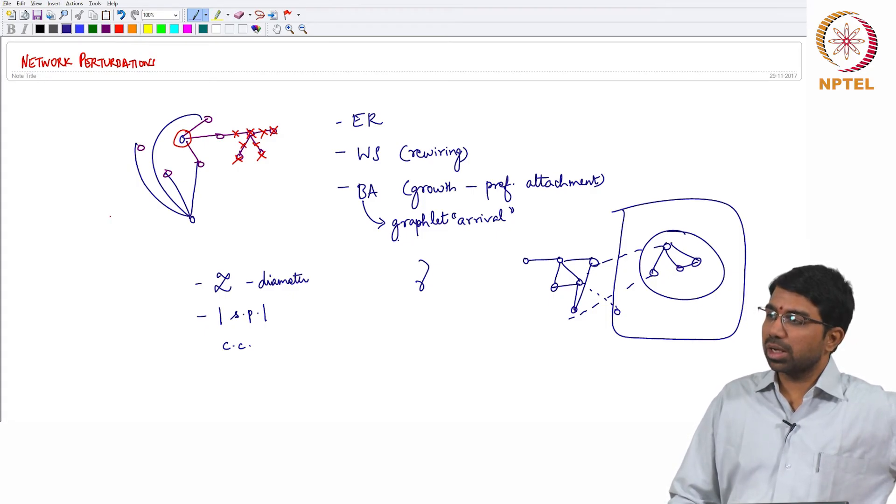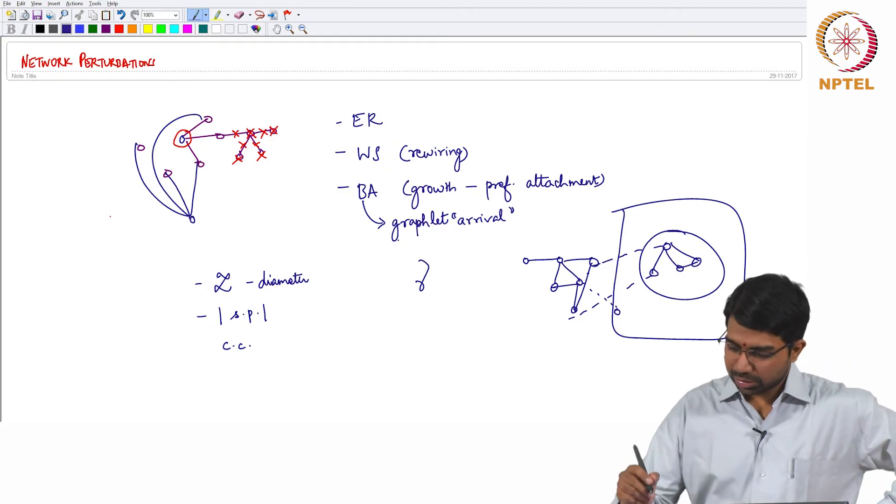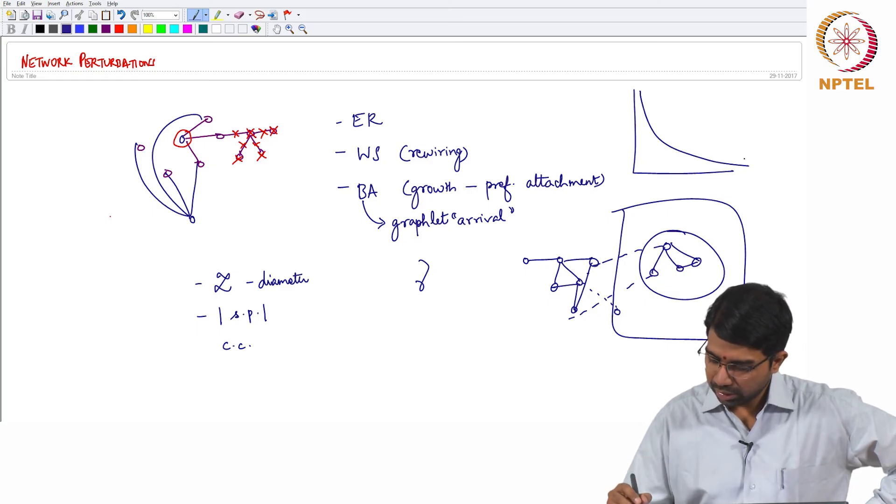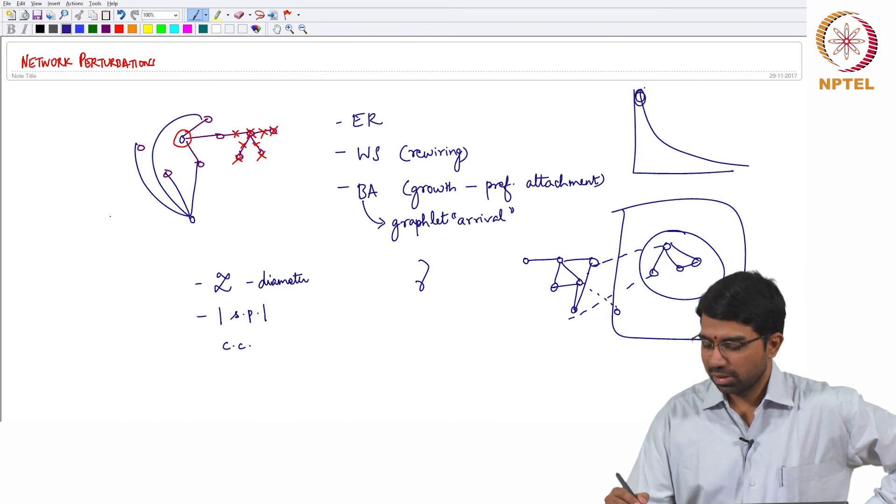You randomly remove a node from a Barabasi-Albert network, it's not going to affect it. Why? Because a random node is likely to have low degree, because the degree distribution looks like this. So these are the most popular nodes, most populous nodes.